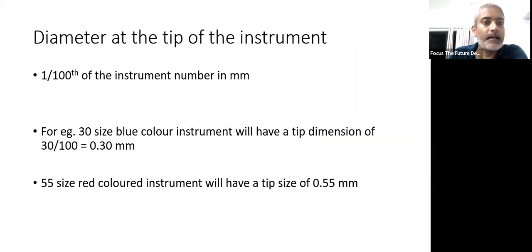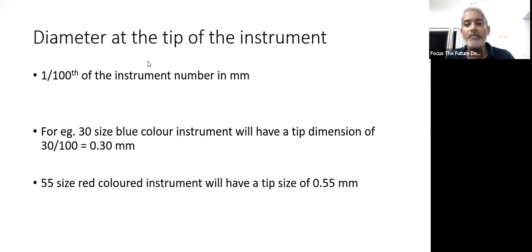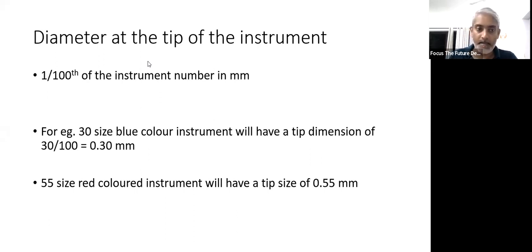What is the relevance of the tip size of the instrument? Basically, whatever number the instrument is — for example, if you are taking a size 40 instrument — the tip size will be 1 by 100 of that 40. That means the tip size of a size 40 instrument will be 0.40 mm. That is how we standardize the instrument.